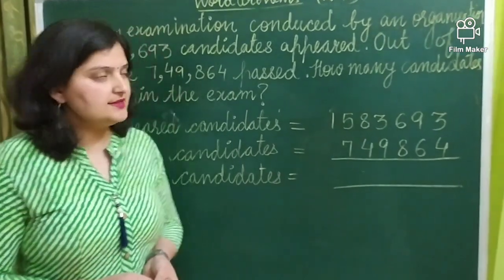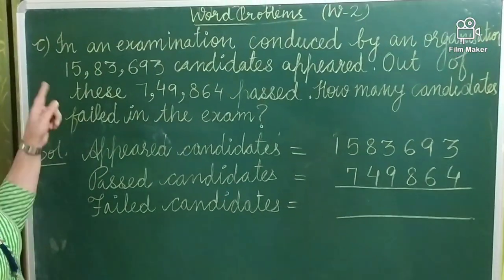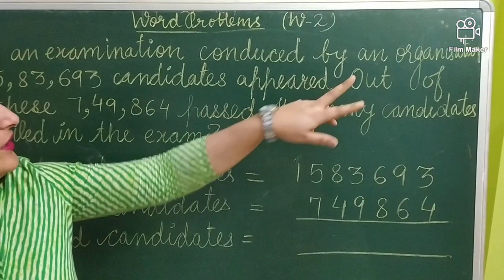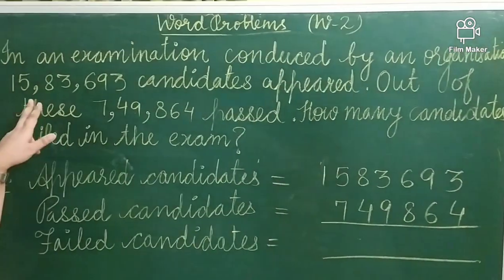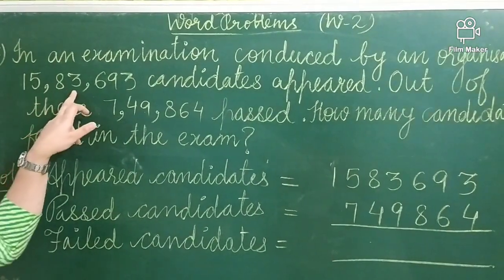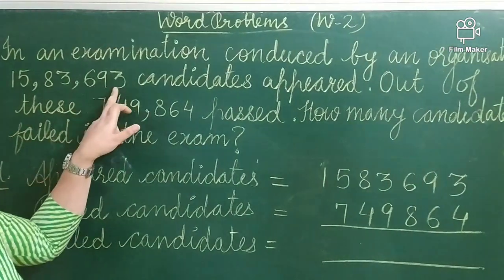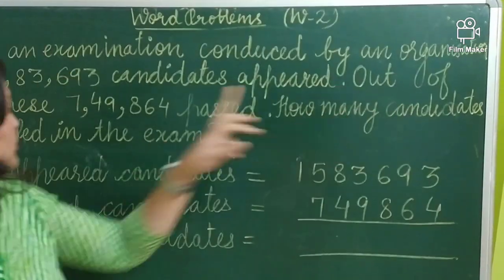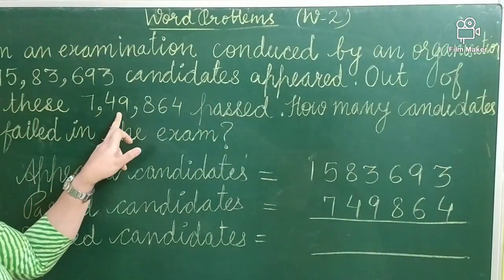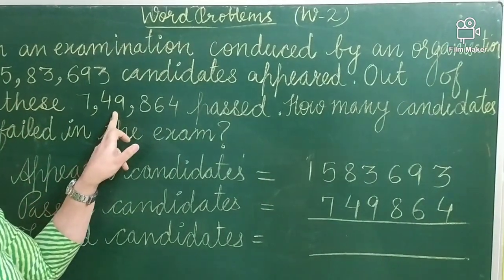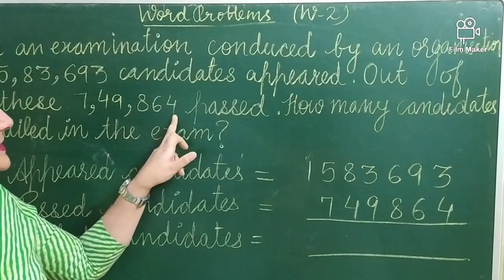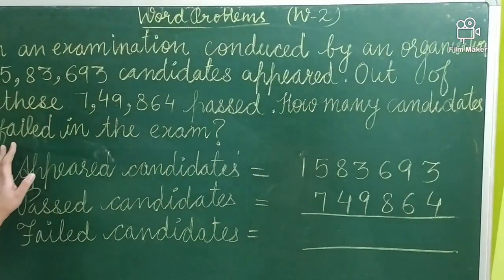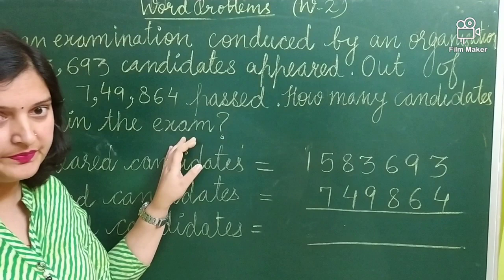Our next question is: in an examination conducted by an organization, 15,83,693 candidates appeared. Out of these, 7,49,864 passed. How many candidates failed in the examination?